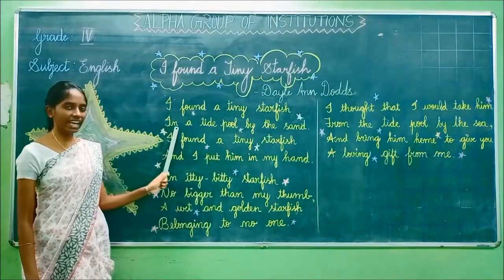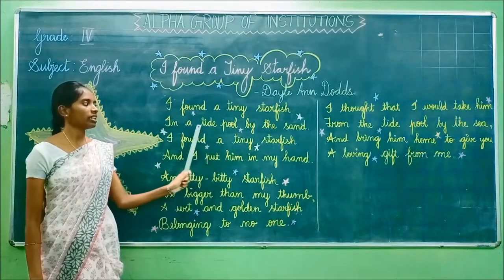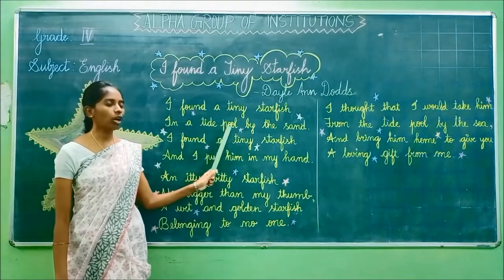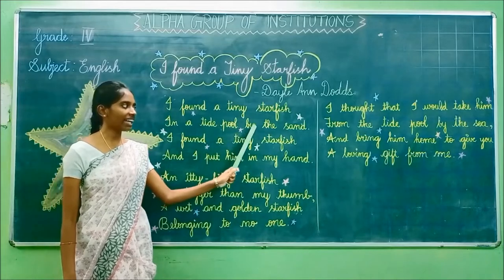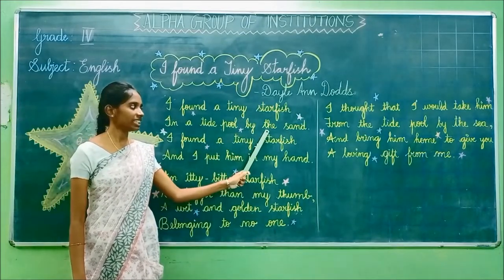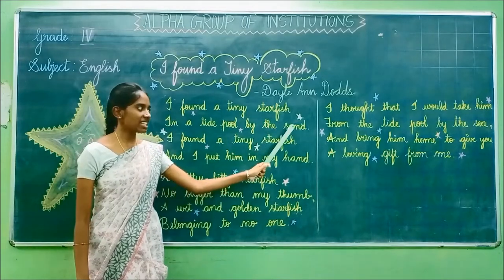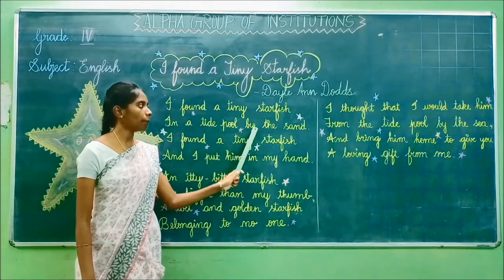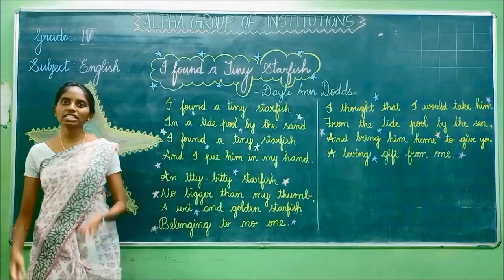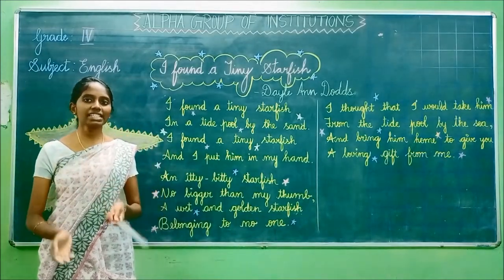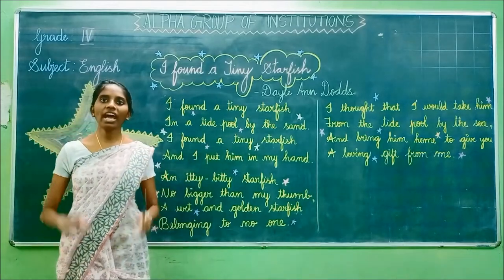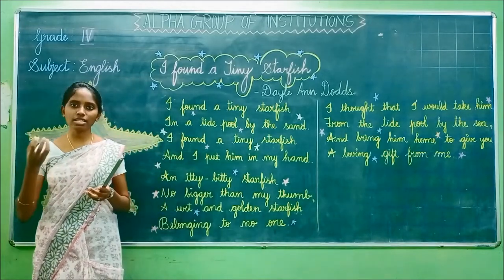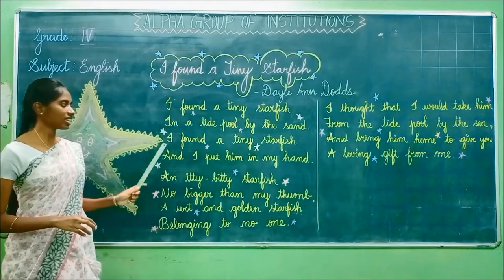See the next line: In a tide pool by the sand. T-I-D-E pool, P-O-O-L, by, B-Y, the, T-H-E, sand, S-A-N-D. The poet finds a very small starfish in a tide pool. A tide pool is an area covered with sea water and rocks. So the author finds a very small starfish in the tide pool.